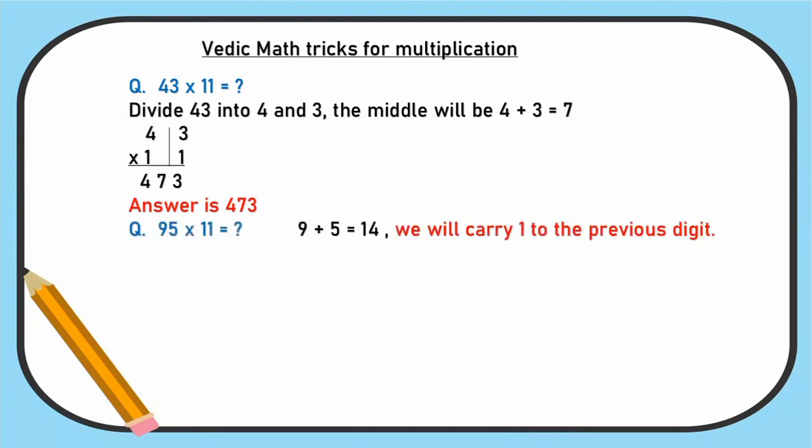Next question: 95 into 11. Multiplication of 11 only I'm explaining. 9 plus 5 middle number is 14. 14 we can't write in the middle. We will carry. You can write only 4 in the middle and 1 carry to the previous digit. See here middle, 4 you can write. 9 into 1 is 9, plus 1 that is 10. Again 4 in the middle. 5 into 1 is 5. So the answer is 1045.